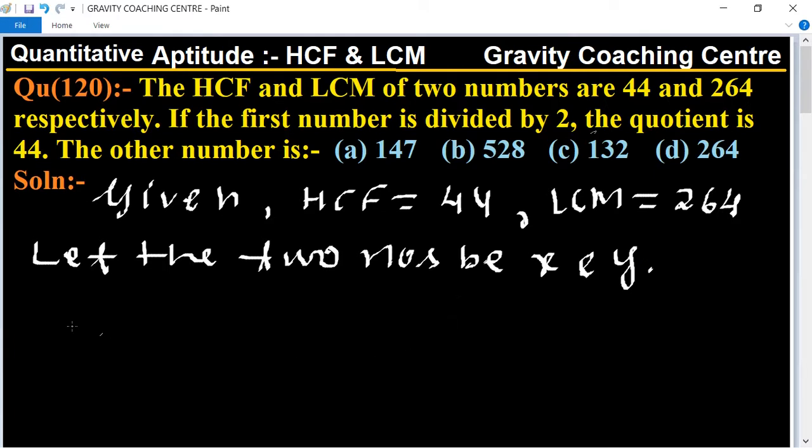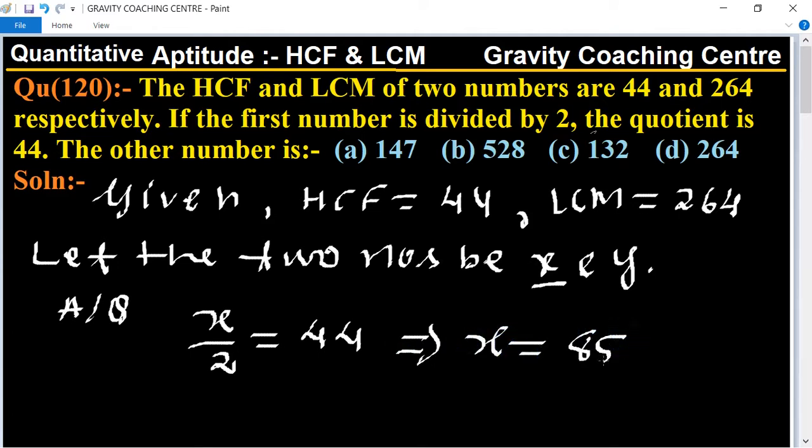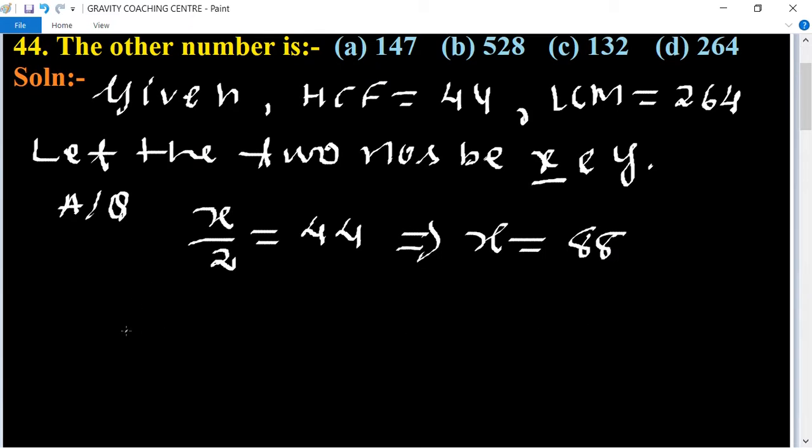According to the question, the first number is divided by 2, so x is divided by 2, and its quotient is 44. This implies that x equal to 88. So the first number is 88. So what is the other number, meaning y?